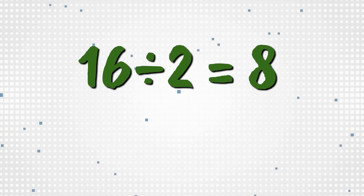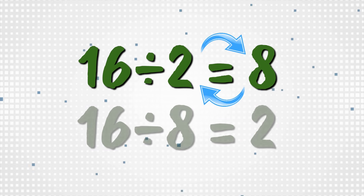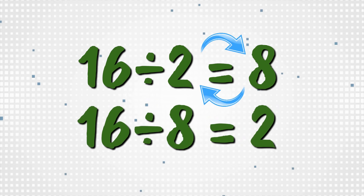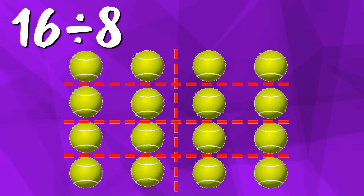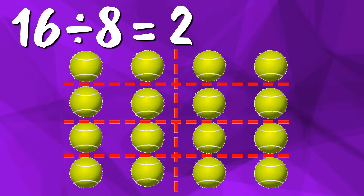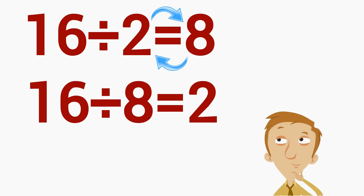We learned that we can switch the divisor and the quotient and it remains true. Let's put that to the test — we'll try 16 divided by eight, which will be two. Here are the 16 tennis balls again, but this time we'll divide them into eight groups because the divisor is eight. Eight players are splitting the 16 tennis balls. How many are in each group? Two. 16 divided by eight equals two. You really can switch the divisor and the quotient and the answer remains true.